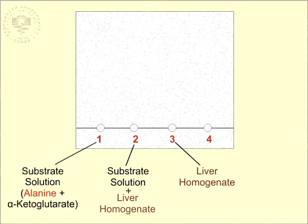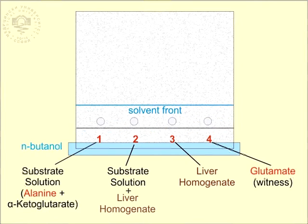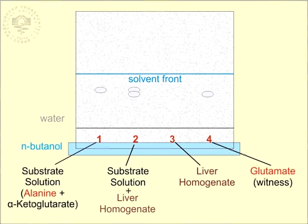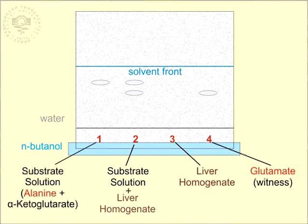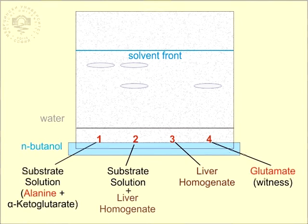The third sample contains the initial non-incubated liver homogenate. A solution of glutamate, used as a witness, is spotted onto the fourth starting point. The witness is used to compare and identify glutamate formed in the incubation mixture by the alanine aminotransferase. The lower edge of the paper is immersed in N-butanol. This non-polar solvent is the mobile phase, which begins to move upwards on the paper, passing through the samples and dragging them up. The amino acids separate on the basis of their different solubility into two immiscible solvents: N-butanol and the immobile phase, the water absorbed on the paper from the air. The water from the air is bound to the cellulose of the paper through hydrogen bonds.